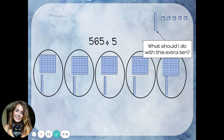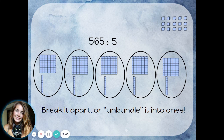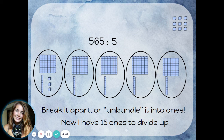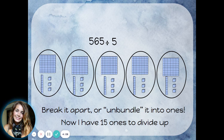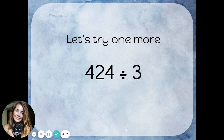I have an extra 10 left over. I don't want to put it in any of the groups because then they won't be equal — the groups have to be equal. Instead, I'm going to unbundle it and turn it into ones. A 10 is really just a group of 10 ones, so let's turn that 10 into 10 more ones. Now I have 15 ones — I had 5 and I just got 10 more. When I divide the 15 ones evenly into 5 groups, I can put 3 in each group.